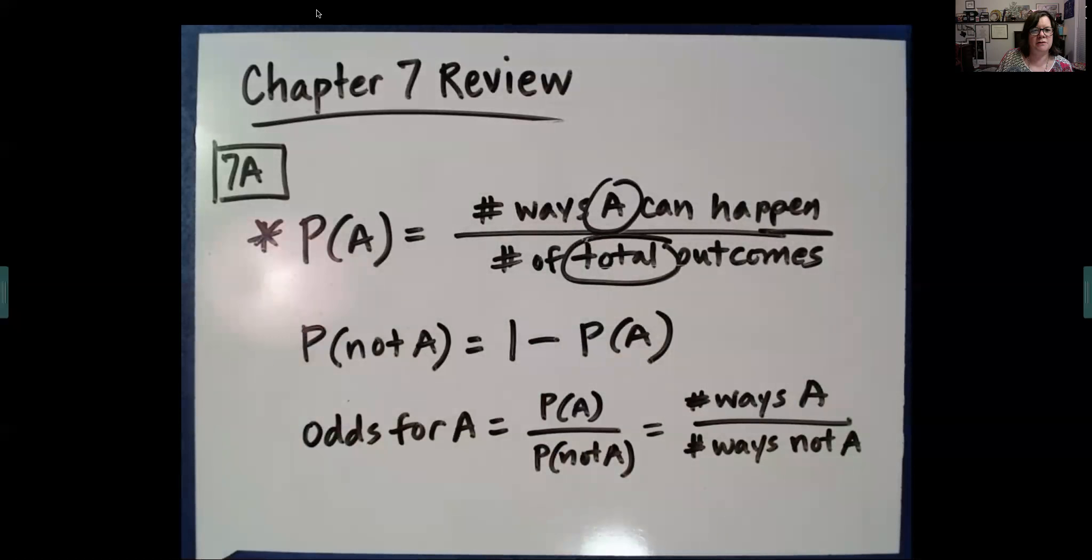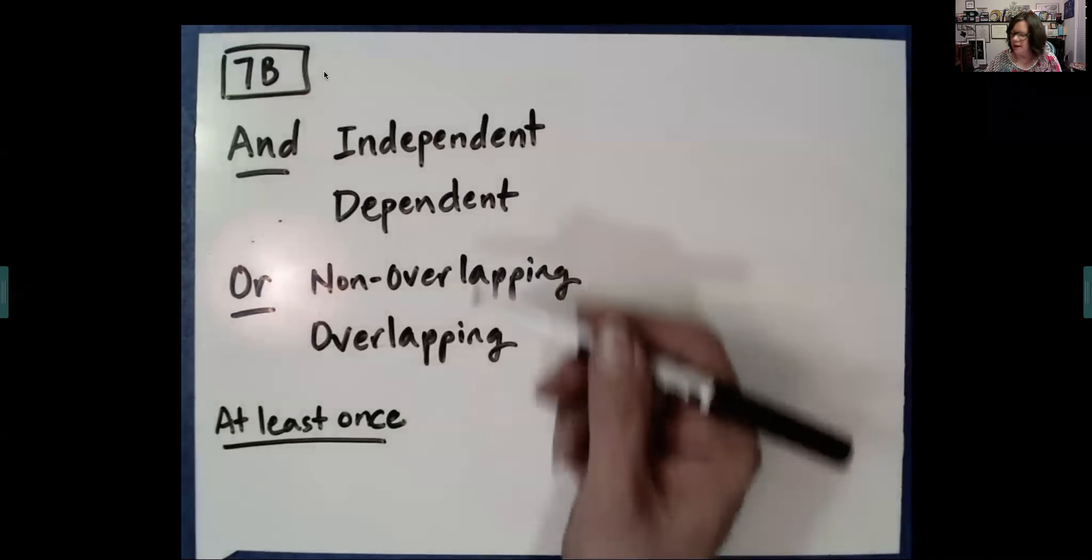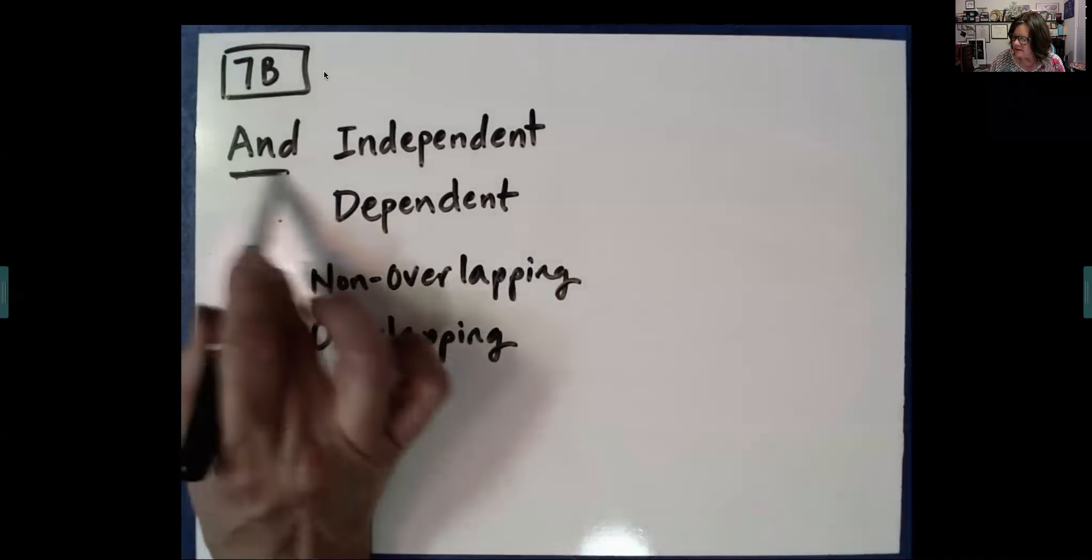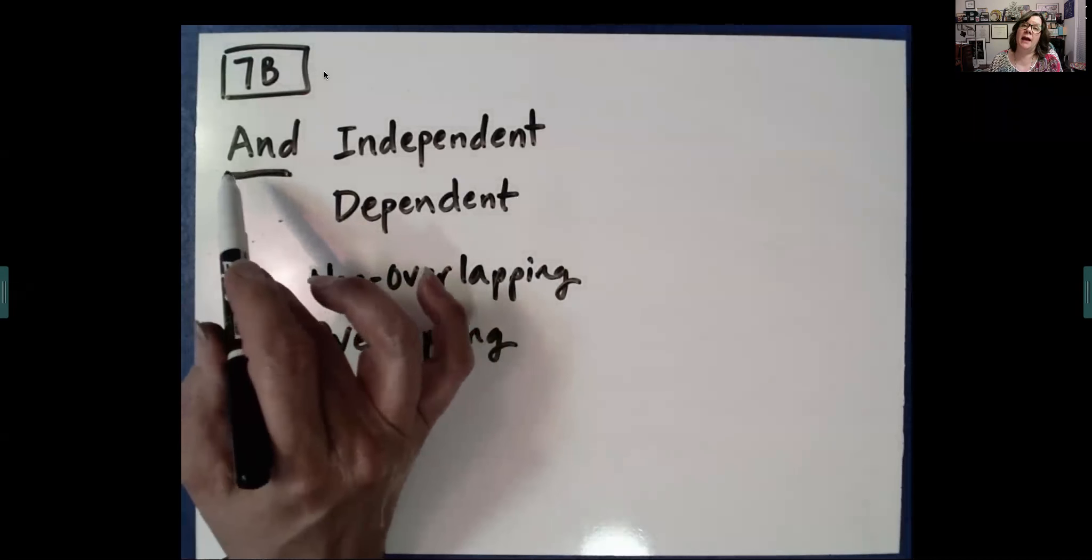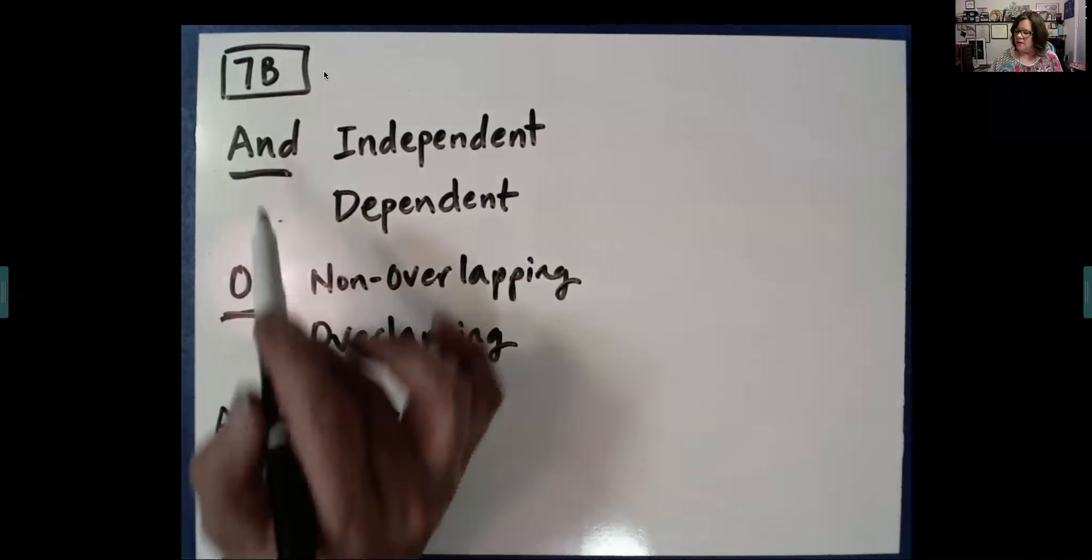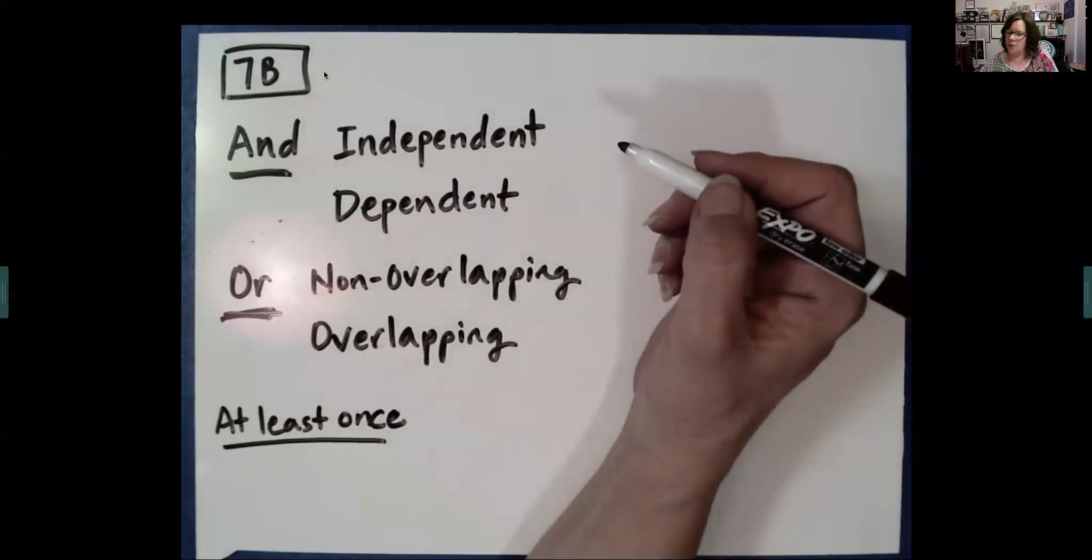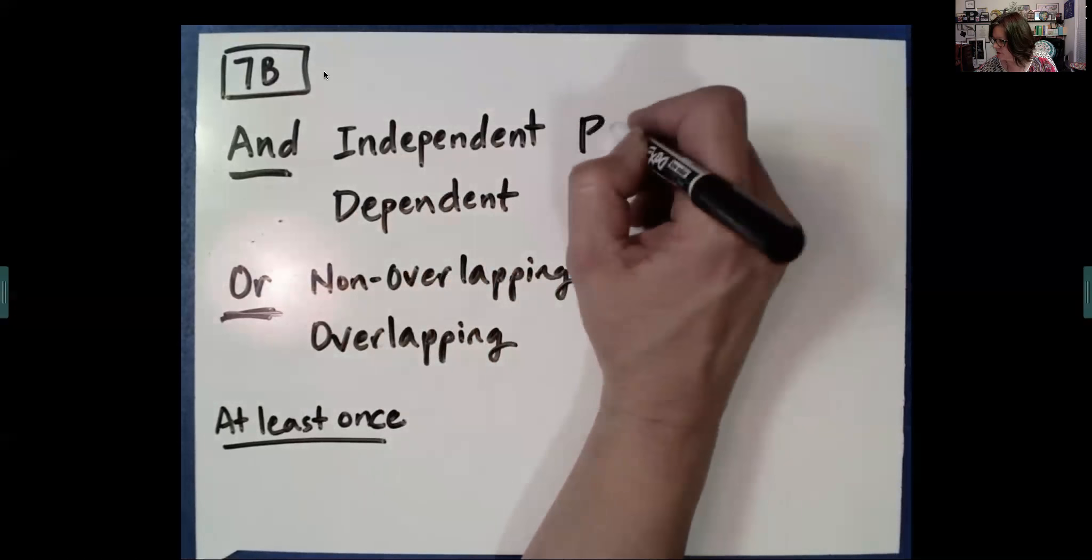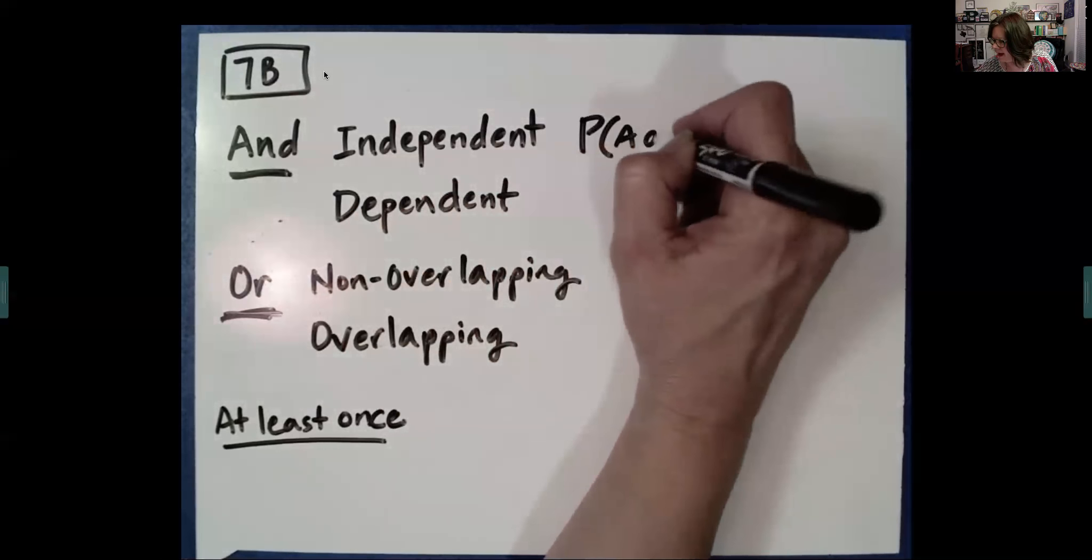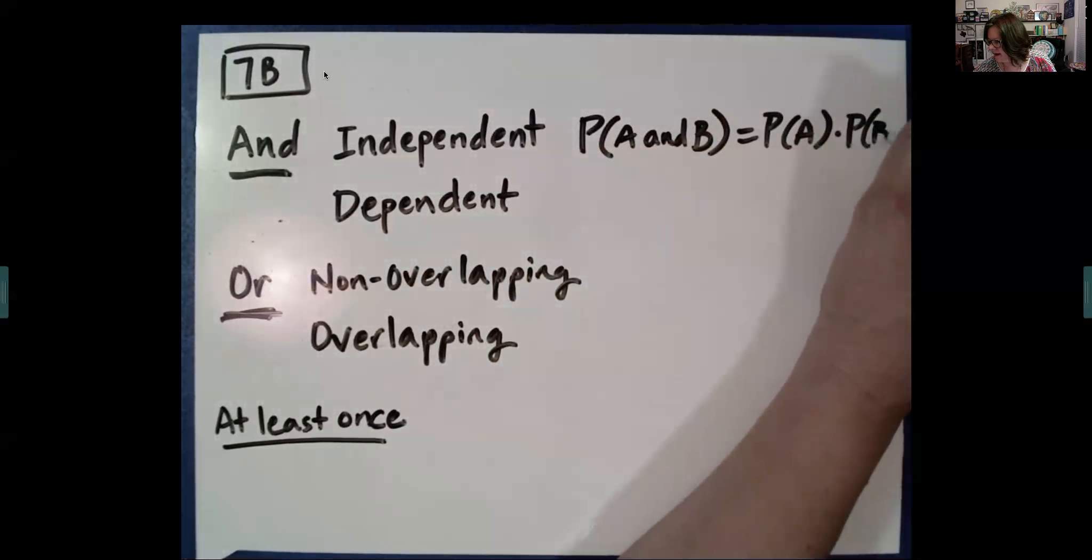Now let's talk about the next section 7b. In this section, we looked at situations that combined events. So we're going to get five formulas. First of all, you need to decide, are you asking about and or or? So this would be, what's the probability of being in band and choir? And is going to be a lower probability, and we're going to get it by multiplication. If they're independent of each other, one doesn't affect the other probability, this is our easiest case. Probability of A and B, we take the probability of A times the probability of B.